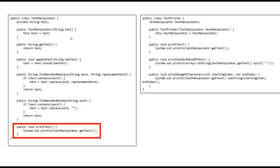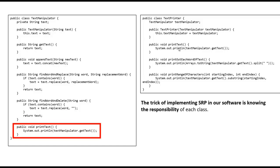The responsibility of this TextManipulator class should only be manipulating the string. So this is also not following the Single Responsibility Principle and is not correct. To make it correct, you have to move printText into some other TextPrinter class, which can then be used for printing the text or string in different formats. Now, following the Single Responsibility Principle is not so easy for a developer. Two difficulties a developer can face are: knowing the complete responsibility of each class, and the fact that in the vision of two different developers, the class responsibility can change. These two things make it very difficult for a developer to write a single responsibility class.